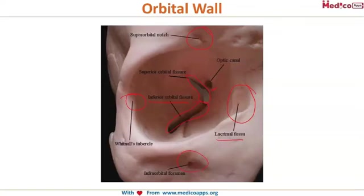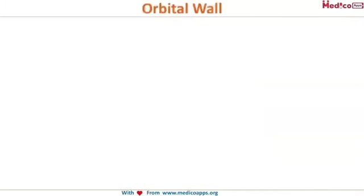We have discussed in various classes all the structures passing through these. Just for your quick revision, you can have a look at these structures and where they are exactly located in the orbital wall. Now let's look at some interesting features about the orbital wall.